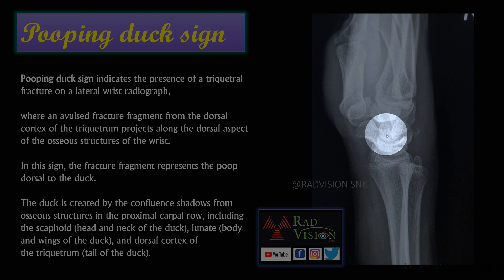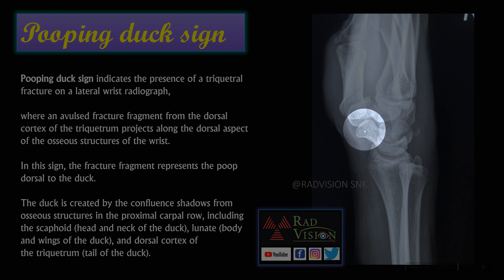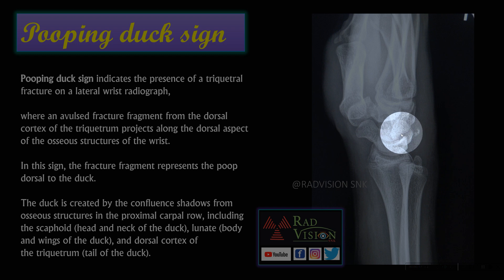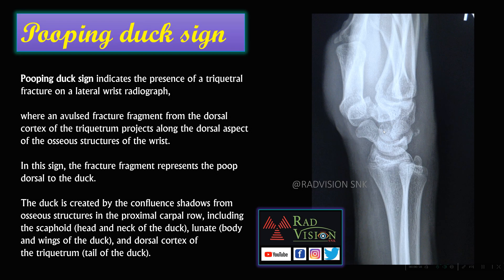Whenever you suspect fracture of the triquetrum with displacement of fracture fragments dorsally, suspect the pooping duck sign. In this pooping duck sign, the proximal scaphoid forms the head and neck of the duck, the lunate forms the body of the duck, the dorsal cortex of the triquetrum forms the tail of the duck, and the fracture fragments displaced posteriorly or dorsally form the poop of the duck.